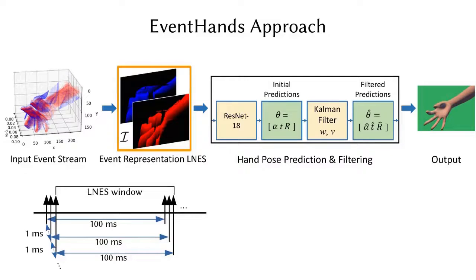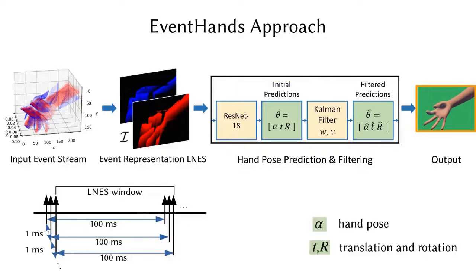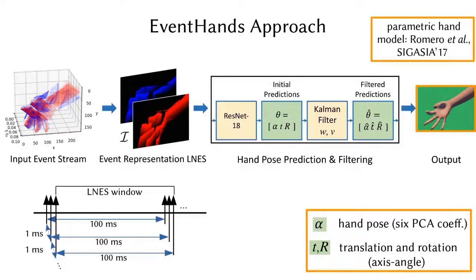To support inference at this high speed and also high prediction accuracy, we choose to use the ResNet-18 backbone. We train our method to map LNES input to a 12-dimensional output space that encodes the hand pose and the global translation and rotation of the hand. The first six parameters represent the first six PCA coefficients of the parametric MANO hand model, and the remaining six parameters encode global hand translation and rotation in axis-angle representation.